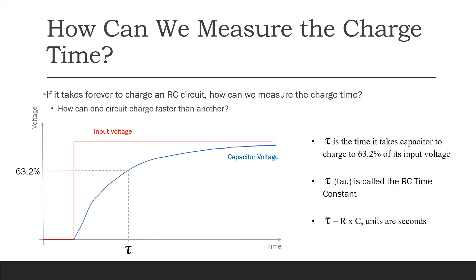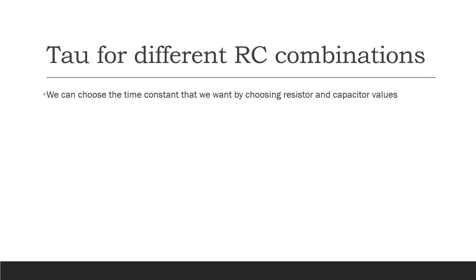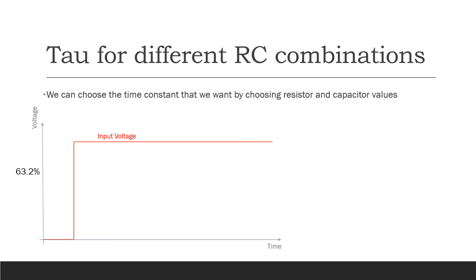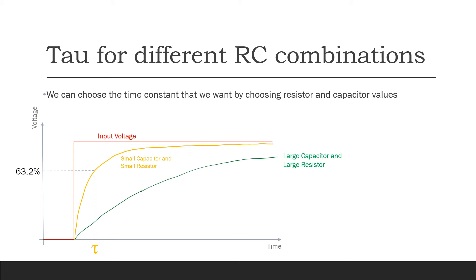Tau is the time it takes the capacitor to charge to 63.2% of its input. Tau is also called the RC time constant, and it is defined as the resistor value times the capacitor value, where the units are in seconds. Since tau is R times C, we can choose the time constant we want by choosing our resistor and capacitor values. A small resistor and small capacitor gives a relatively small time constant, while a large resistor and large capacitor gives a longer time constant.